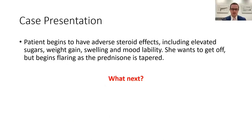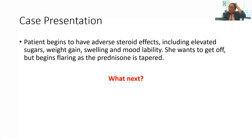Unfortunately, the patient does have adverse steroid effects with elevated blood sugars, weight gain, swelling, and mood lability. She wants desperately to get off of steroids but begins flaring as soon as the prednisone is tapered. We do have second-line agents that have organ-specific responses. I would consider one of the three FDA-approved agents — ibrutinib, ruxolitinib, or belumosudil. There's not a standard as to which to use first; it really depends on the patient, their toxicities, whether they have cytopenias, and other factors to determine what medicine to use next.